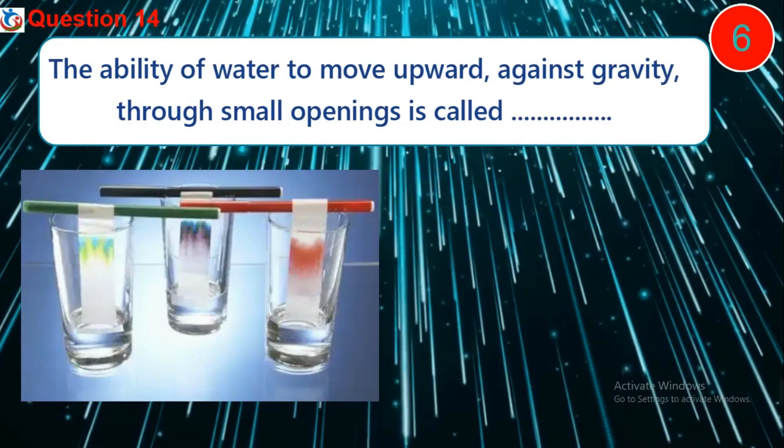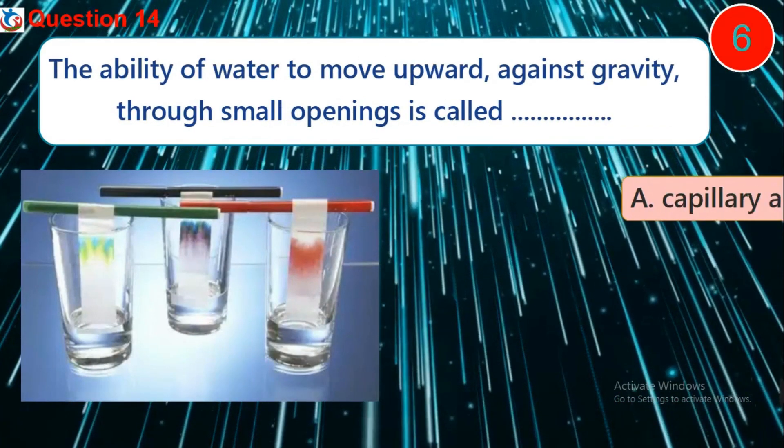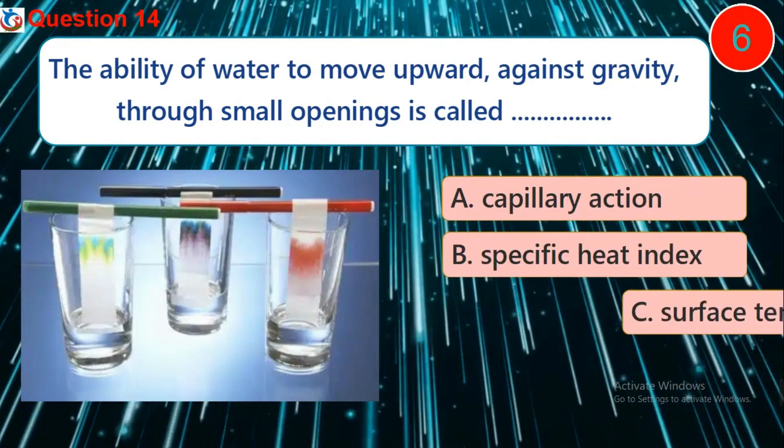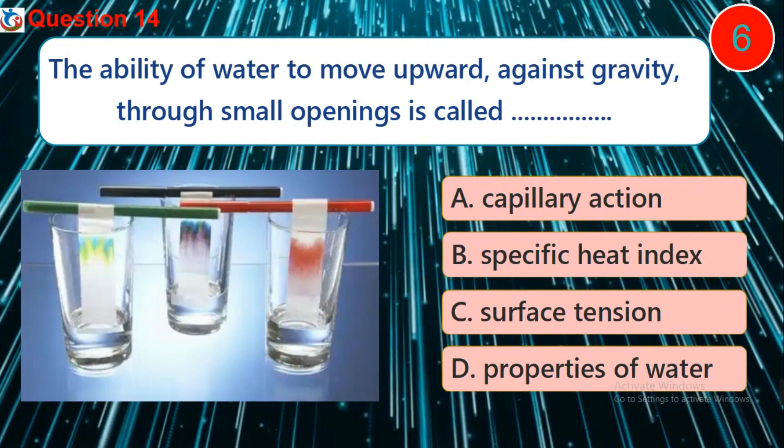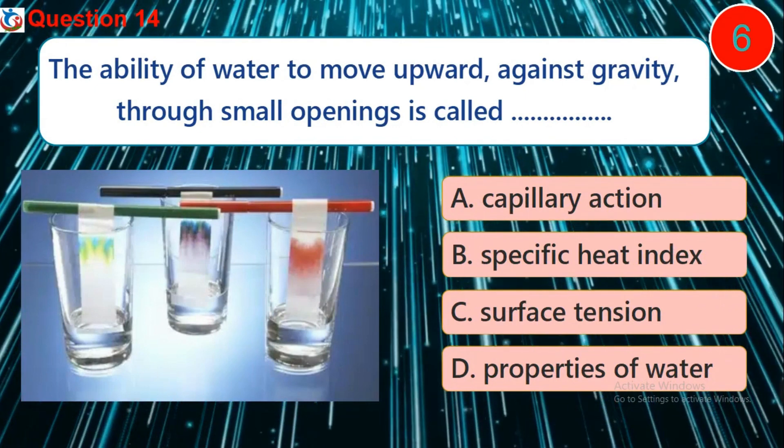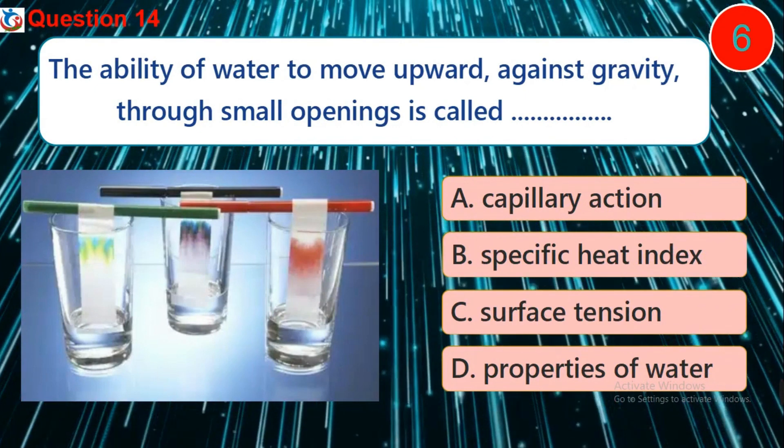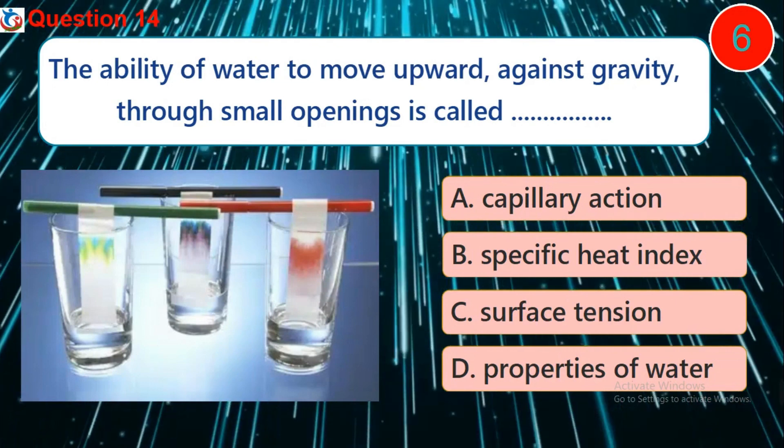Question 14. The ability of water to move upward against gravity through small openings is called? A. Capillary action B. Specific heat index C. Surface tension D. Properties of water